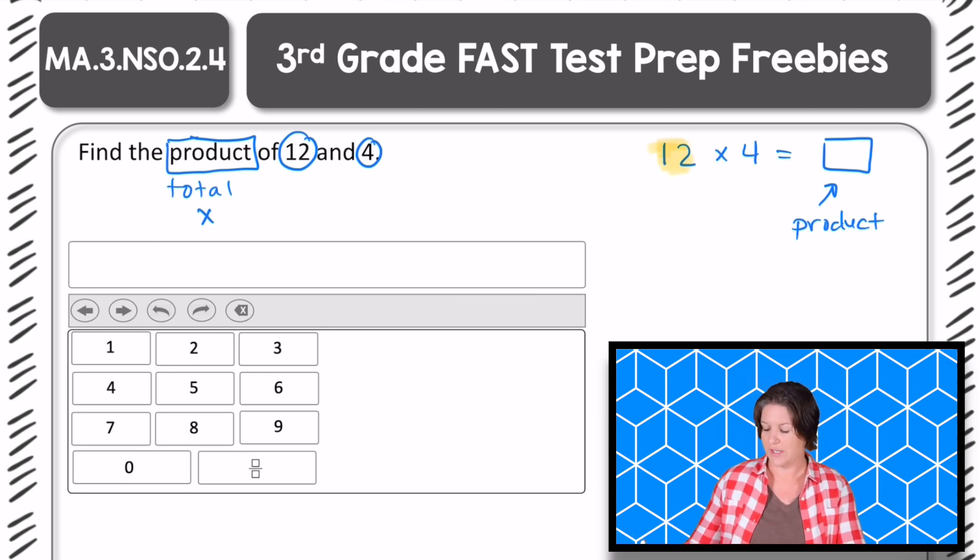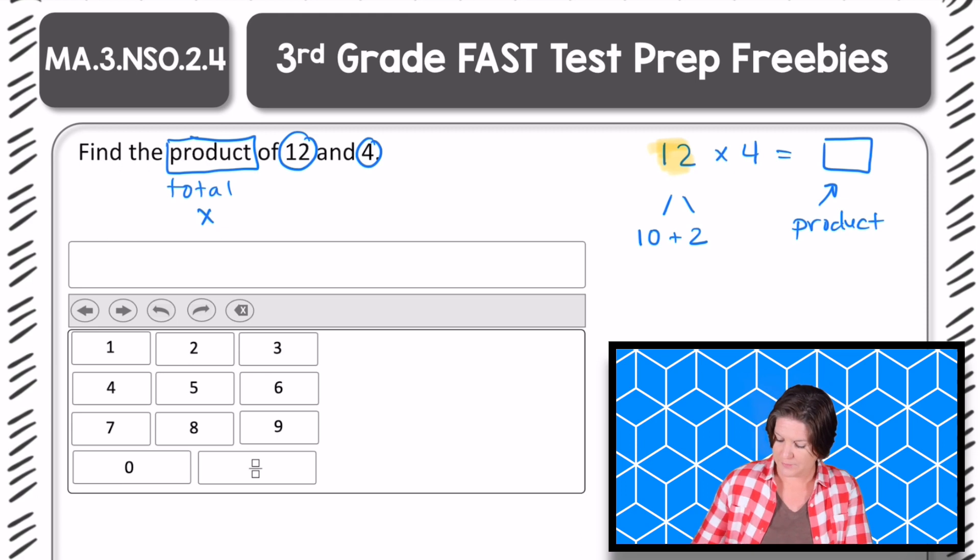Now you could have used a bunch of different strategies here. I'm going to break down the 12 into 10 because that's an easier factor to solve and 2. 2 plus 10 or 10 plus 2 equals 12. So I'm breaking down 12 into 10 and 2. So that means that we're going to do 10 times 4, the other factor, plus we're going to add the 2 times 4.